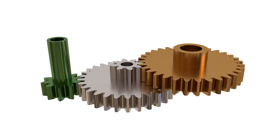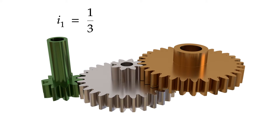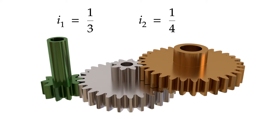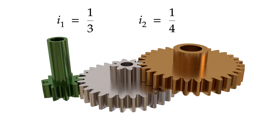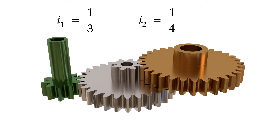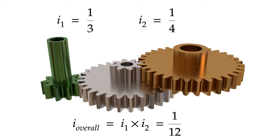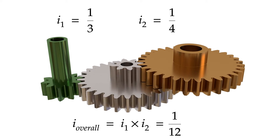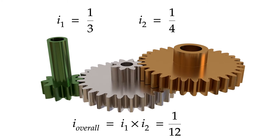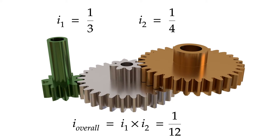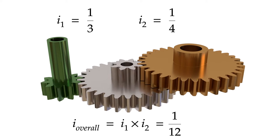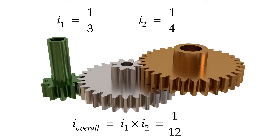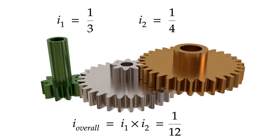In this example, the first stage has a gear ratio of 1 to 3 and the second stage 1 to 4. Therefore, thanks to the use of a compound gear, the overall gear ratio of this train is 1 to 12. Since there is an even number of stages, the input and output shafts spin in the same direction. They would spin in opposite directions if the number of stages were odd.